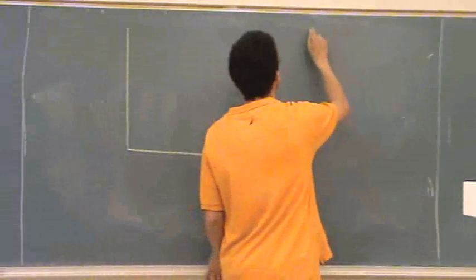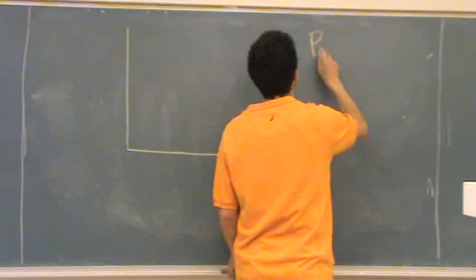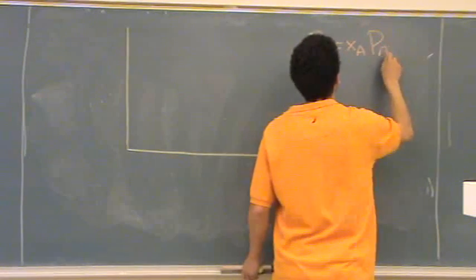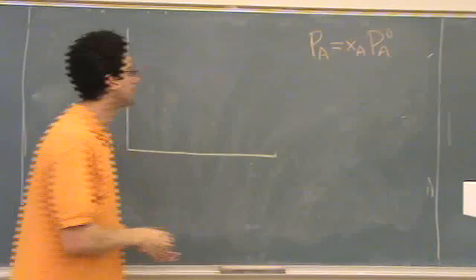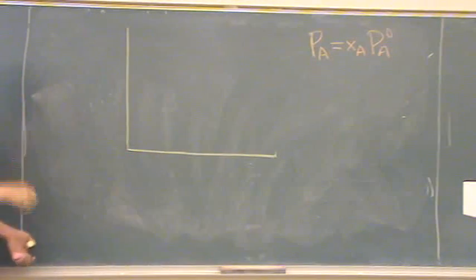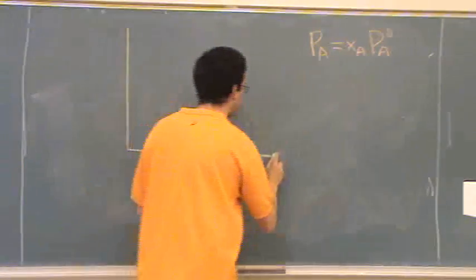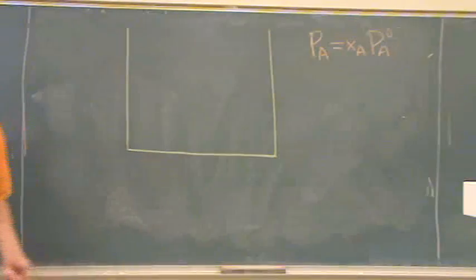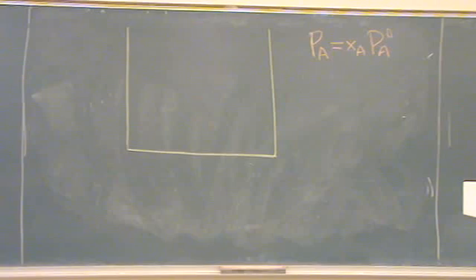Raoult's Law says, I'll just put these in different colors, PA equals XA PA naught. Okay? And then to make our graph complete, we usually do this in a little box. Just to make it look prettier. There's no other reason.